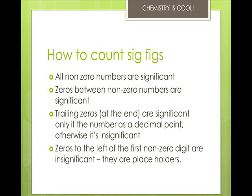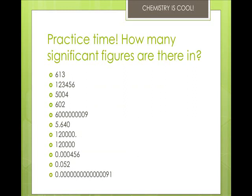Here are the four main rules you need to know: all non-zero numbers are significant; zeros between non-zero numbers are significant; trailing zeros, which means they're at the end, are significant only if the number has a decimal point, otherwise they're insignificant; zeros to the left of the first non-zero digit are also insignificant because they're simply placeholders. So let's take a look at these. I want you to pause the lecture and then come back and tell me how many there are. I will go over them after you pause it and practice.